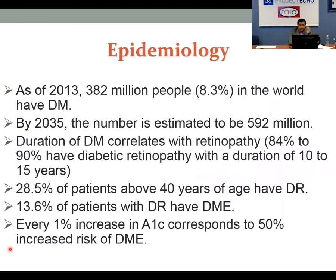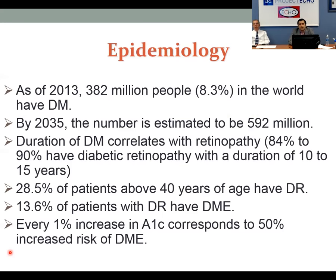As of 2013, 382 million people in the world have diabetes, estimated to reach 592 million by 2035. Duration of diabetes correlates with retinopathy — 84 to 90% of patients will have diabetic retinopathy with a duration of 10 to 15 years. If somebody comes in with retinopathy and says they just got diagnosed with diabetes, I usually say they've been diabetic for a long time and just didn't know it. 28.5% of patients above 40 years of age who are diabetic have diabetic retinopathy.